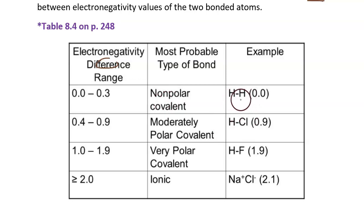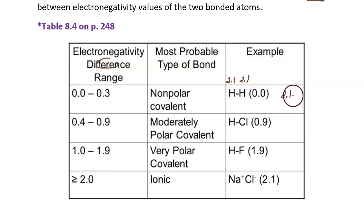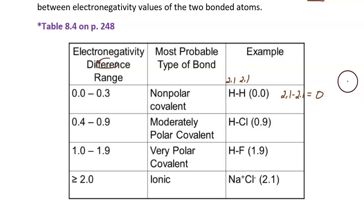Here's an example: H2, diatomic hydrogen. This covalent bond is a nonpolar covalent bond. The electronegativity value for each hydrogen is 2.1. When you subtract 2.1 from 2.1, that creates a difference of zero, which fits in the nonpolar range of the table.